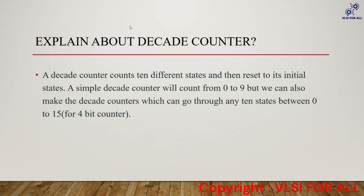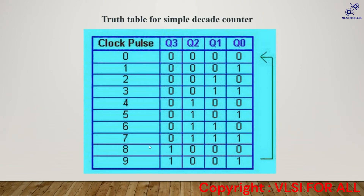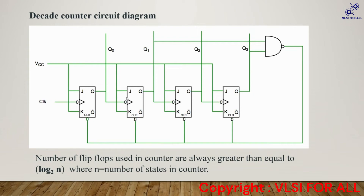Next question: explain the decade counter. Decade means 10, so it counts 10 different states and then resets to the initial state, counting from 0 to 9. We can also make it count any 10 states between 0 and 15. With three flip-flops we can only count up to 8 states (0 to 7), but since we need 10 states we must use four flip-flops.